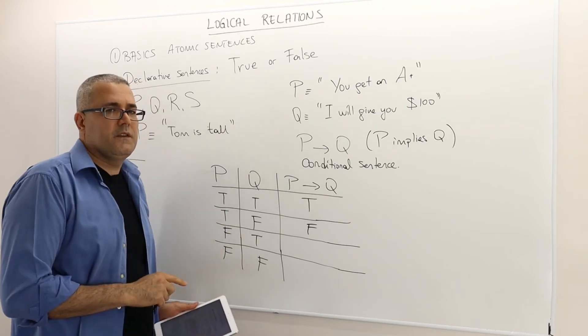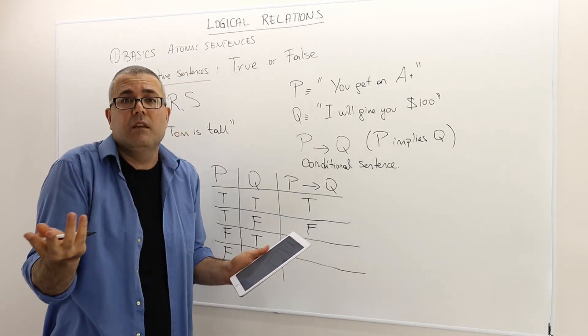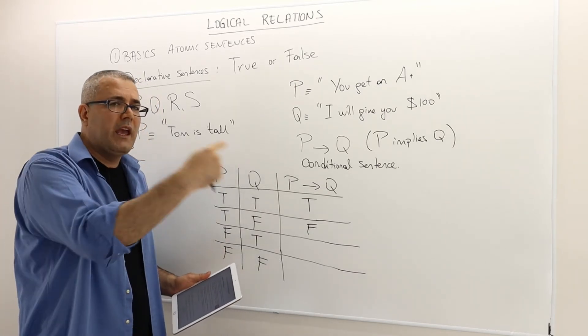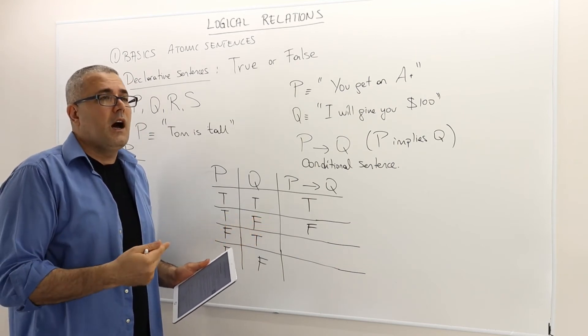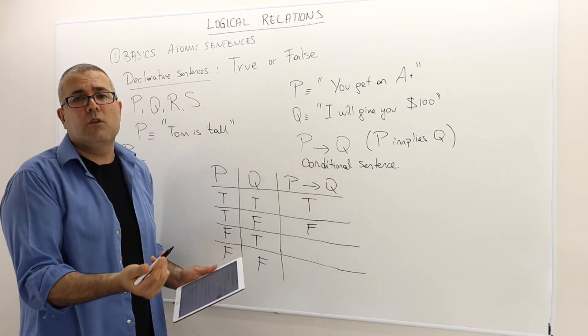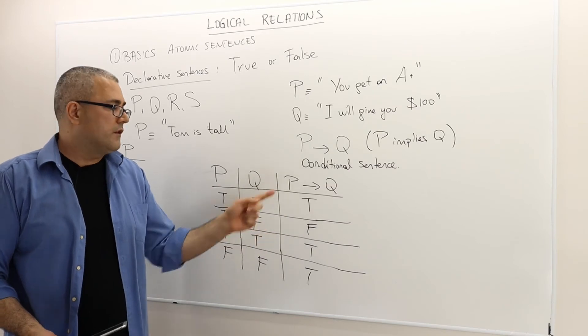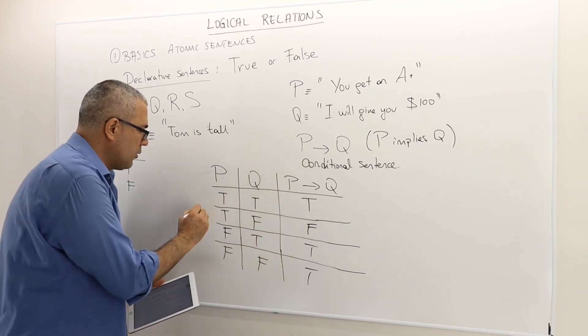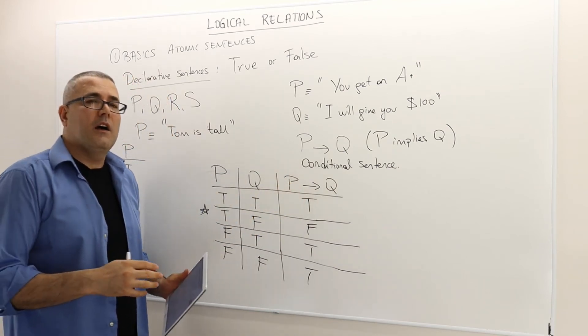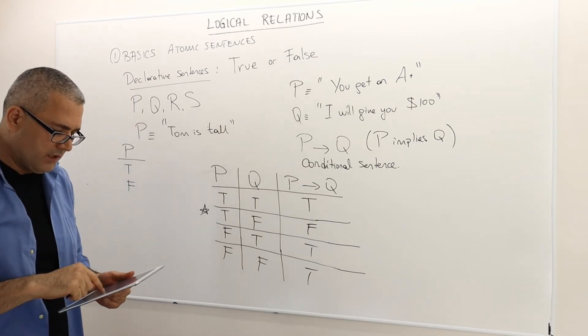What about the other two cases, so P is false. That means you actually cannot get A+. Say you get B or B+, something not A+. Well, in that case, whether I keep my promise and pay you $100 or not, I'm not the one who breaks my promise. So that statement remains to be true. We can't say it's false. Therefore, the conditional statement P implies Q is always true, except one case where Q is false and P is true. This is how we construct the truth table of any conditional statement. It's not just for this specific example, but we can generalize this for any P and Q.